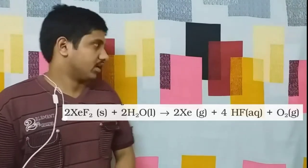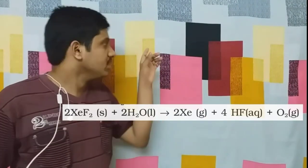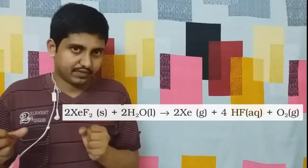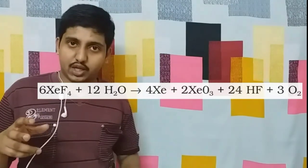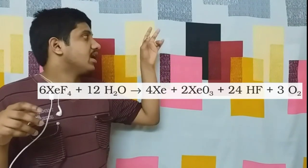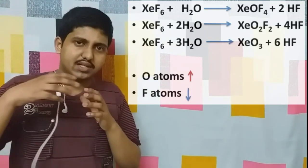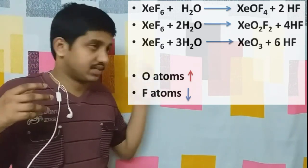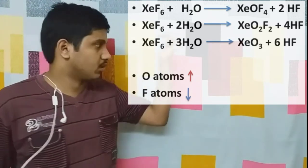Next are the reactions with water. XeF2 with H2O reacts to give xenon and HF, which are simple elements and compounds. XeF4 with H2O reacts to give xenon, HF, and in addition, another product: XeO3.